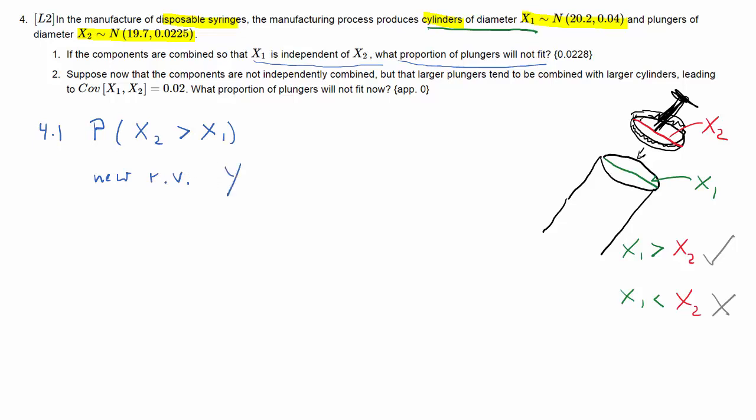So we're asking for the probability that X2 is larger than X1. Let's form a new random variable. Let's call that Y, and we define that as X2 minus X1. And what we are then really looking for is the probability that Y is larger than 0, and that's equivalent to the probability that X2 is larger than X1. And whenever Y is larger than 0, the syringe isn't going to work. Now, as both X1 and X2 are normally distributed, and we're having a linear combination of two normally distributed random variables, we know that Y is normally distributed as well.